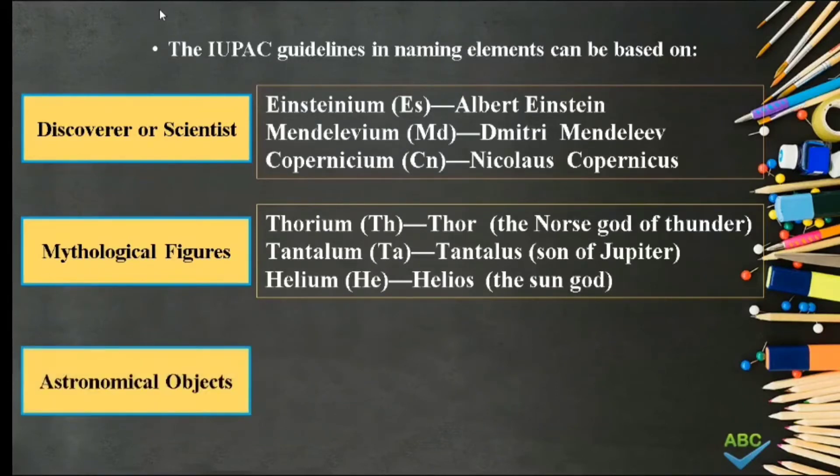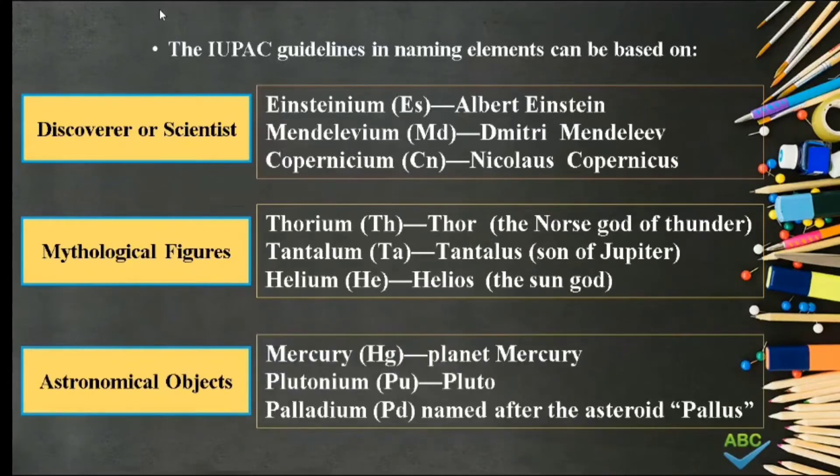Number 3. Astronomical objects. Such as Mercury, named after the planet Mercury. Plutonium, named after Pluto. And Palladium, named after the asteroid Pallas.